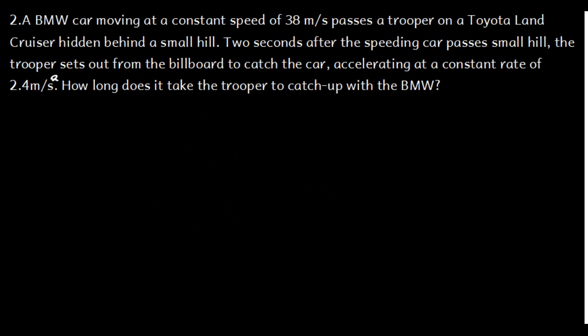Question Two: A BMW car moving at a constant speed of 38 meters per second passes a trooper on a Toyota Land Cruiser hidden behind a small hill. Two seconds after the speeding car passes the hill, the trooper sets out from the billboard to catch the car, accelerating at a constant rate of 2.4 meters per second squared. How long does it take the trooper to catch up with the BMW?